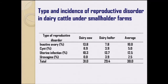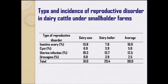This shows the types and incidence of reproductive disorder. We found inactive ovary, cyst, uterine infection, and urovagina in dairy cows. The averages were: 10% for inactive ovary, 5–6% for cysts, 12.5% for uterine infection, and 2.5% for urovagina. A notable finding is that uterine infection occurred at a slightly higher rate in dairy heifers than in dairy cows.